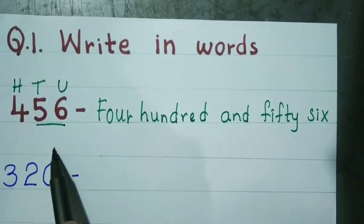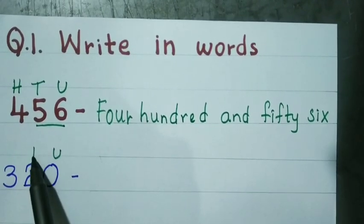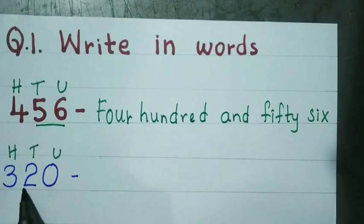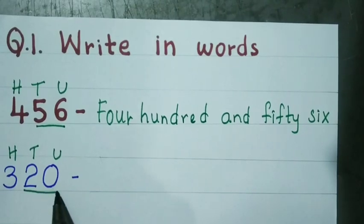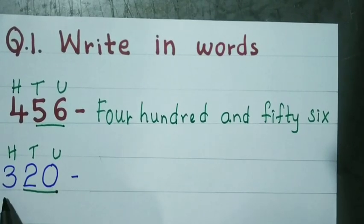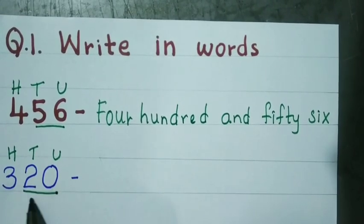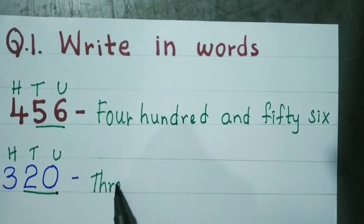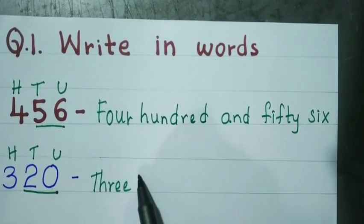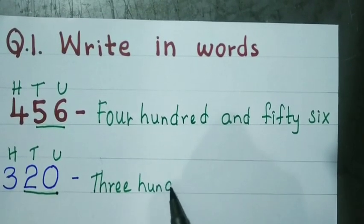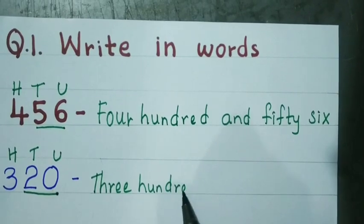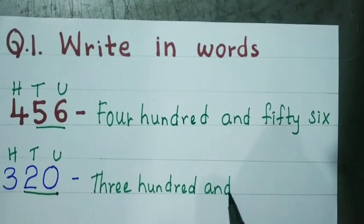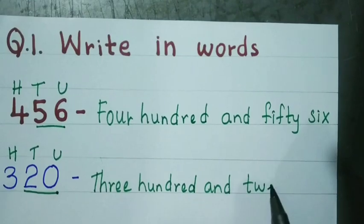Write the place value first. These two numbers are read together: 300 and 20. Write the spelling of 300 and 20.